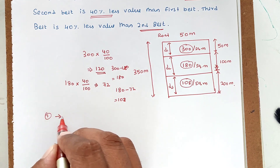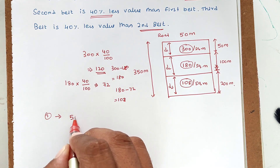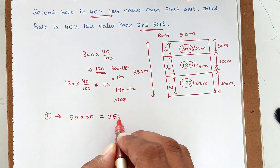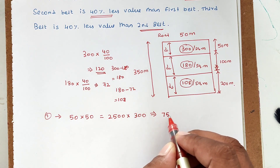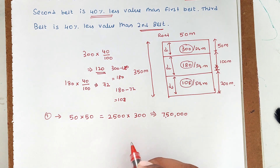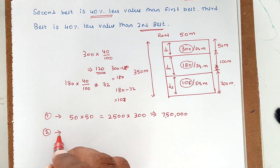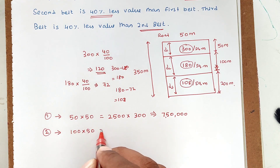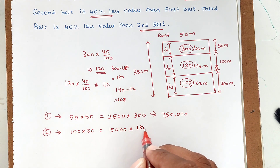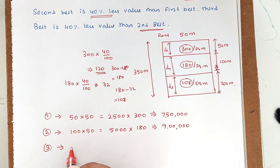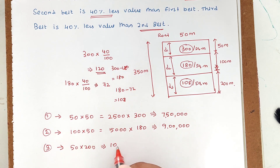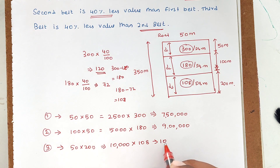First belt area: 50 into 50 equals 2,500 square meters, into 300 = 7,50,000 rupees. Second belt area: 100 into 50 equals 5,000 square meters, into 180 = 9,00,000 rupees. Third belt area: 200 into 50 equals 10,000 square meters, into 108 = 10,80,000 rupees.